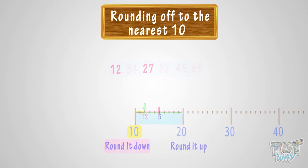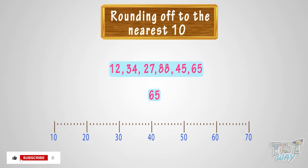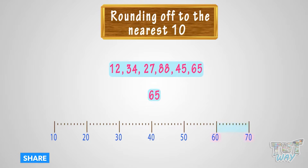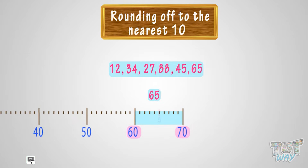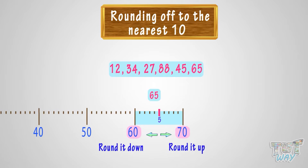Let's take the next number, 65. Where can you fit 65 on this number line? It is somewhere between 60 and 70. Whenever you want to round a number, there are always two options. Either we can round it down to 60 or round it up to 70. Think, which option do you think is more apt?